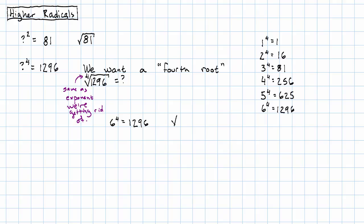We've discovered that 6 to the fourth power is 1296. Therefore, the fourth root of 1296 equals 6.